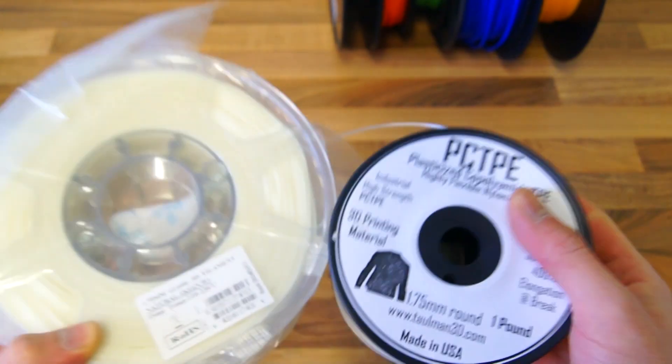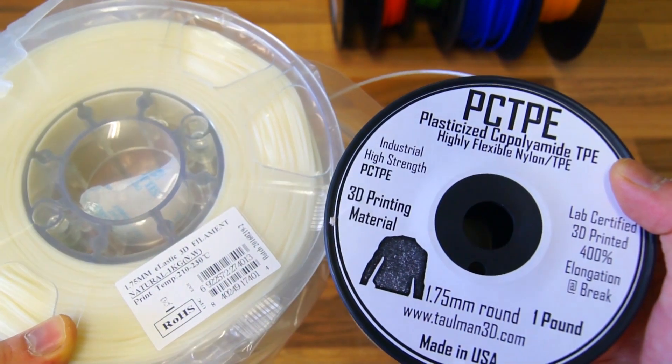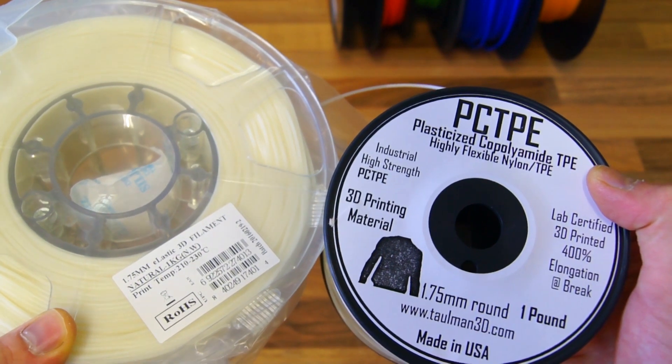In today's video I will take a look at two flexible filaments, the E-Sun Elastic and the Tolman PCTPE.